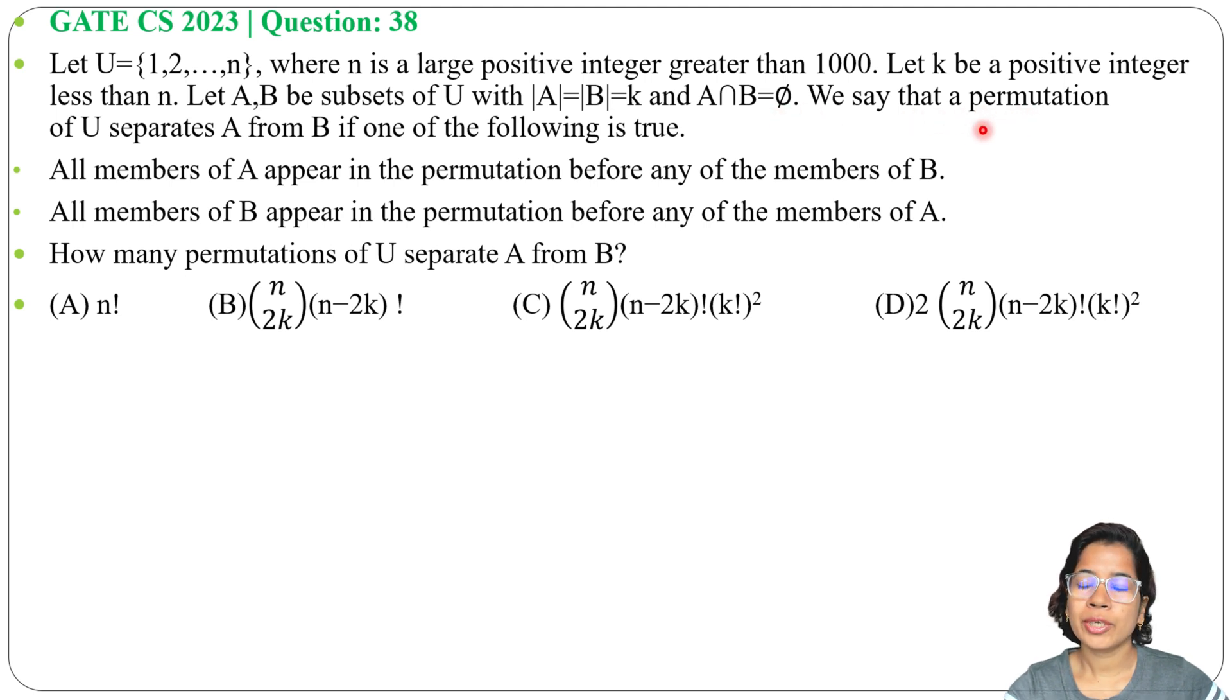We say that a permutation of U separates A from B if one of the following is true. There are two conditions: all members of A appear in the permutation before any of the members of B, or all members of B appear in the permutation before any of the members of A.